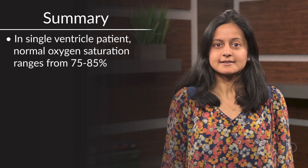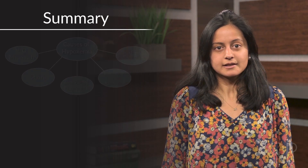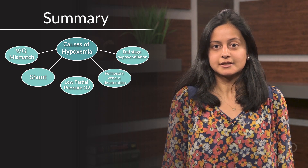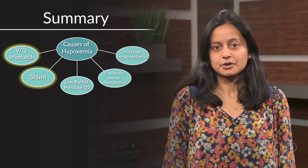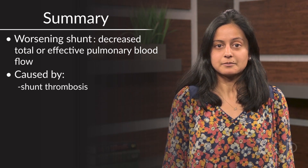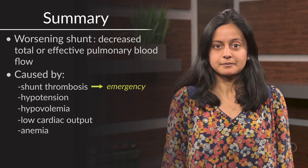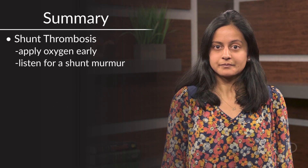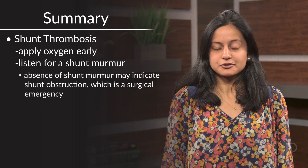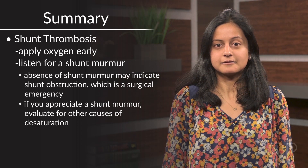Summary. Now let's recap. In a single ventricle patient who has the same pump supplying blood flow to their body and lungs, their normal saturations are expected to be 75 to 85%. Always think of the five causes of hypoxemia whenever you're evaluating desaturation in any patient — but in this patient, it will most likely be due to worsening shunt or VQ mismatch. A worsening shunt, meaning decreased total or effective pulmonary blood flow, can be due to shunt thrombosis, hypotension, hypovolemia, low cardiac output, or anemia. Shunt thrombosis is the emergency you want to rule out. You should apply oxygen early and listen for a shunt murmur. An absence of a shunt murmur is a red flag indicating possible shunt obstruction, which can progress rapidly to a surgical emergency. If you appreciate a shunt murmur, you can proceed to evaluate for other causes of desaturation. Thank you for watching this video on shunt thrombosis.